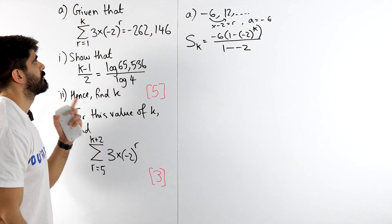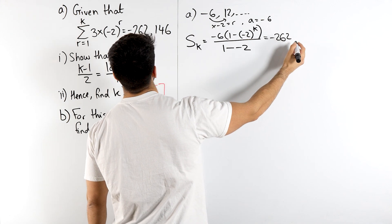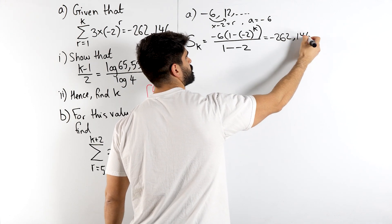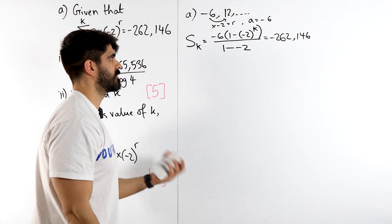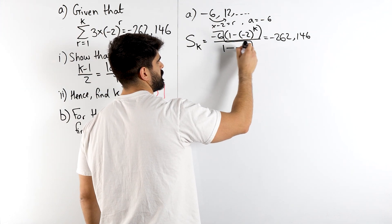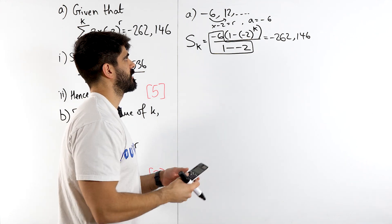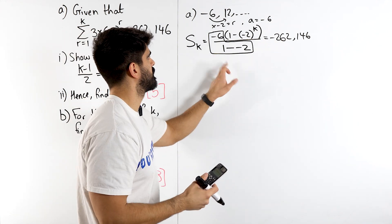Now they're saying that is minus 262,146. Now what I always advise my students to do is to calculate this part first, because we should notice that has been the sum to infinity. So that's minus 6 divided by 3 which is minus 2. And then you do this divided by this.